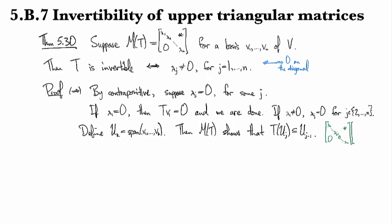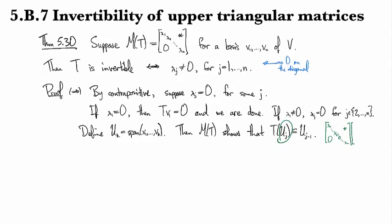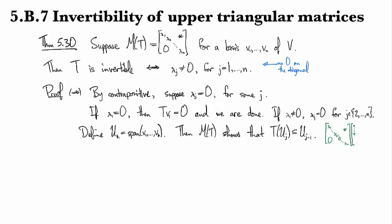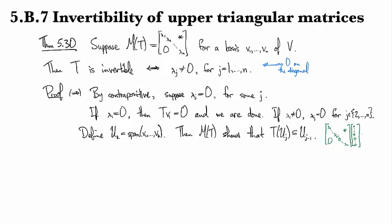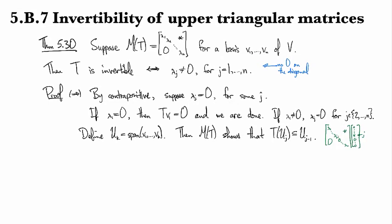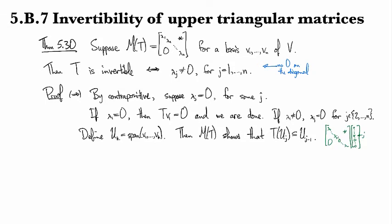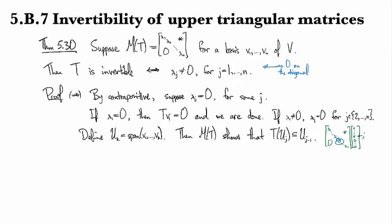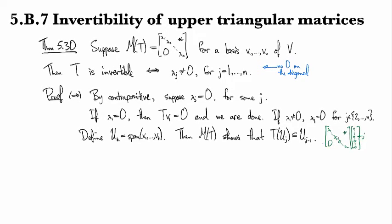Now if we start with something in U_j, in the span of the first j of them, so we've got stuff and then zeros thereafter. This is the jth entry.